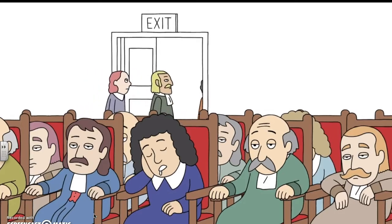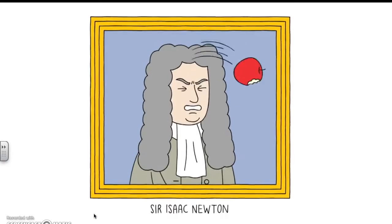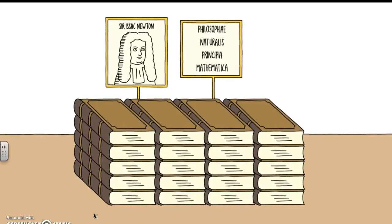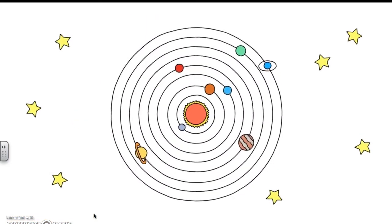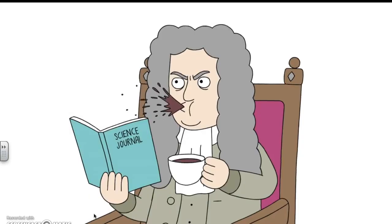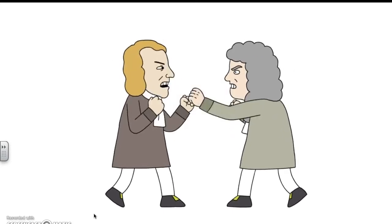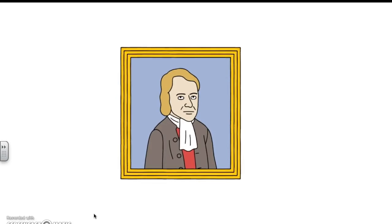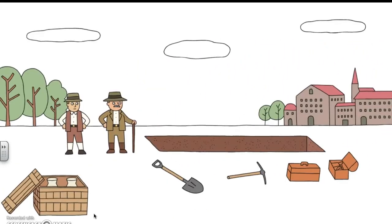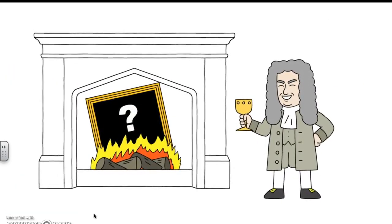Hooke was something of an underappreciated scientist of his day, partly because he made the mistake of locking horns with Sir Isaac Newton. After Newton published a groundbreaking book on how planets move due to gravity, Hooke claimed that Newton had been inspired by Hooke's own work in physics. Newton did not like that, which sparked a tense relationship between the two that lasted even after Hooke died. Much of Hooke's research, as well as his only portrait, was misplaced due to Newton. While much of his research was rediscovered after Newton's time, his portrait was not — so sadly no one knows what Robert Hooke looked like.